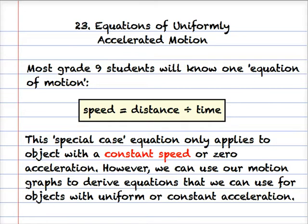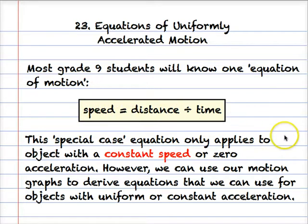Now most of you will already know one equation of motion, and that is speed — or some of you might say rate — equals distance divided by time. But this is a special case equation that only applies to objects that are traveling at a constant speed, so there's no acceleration involved.